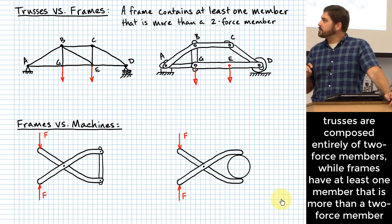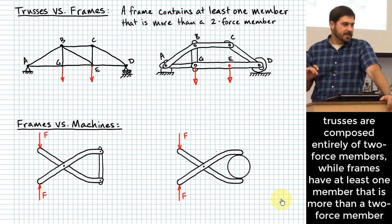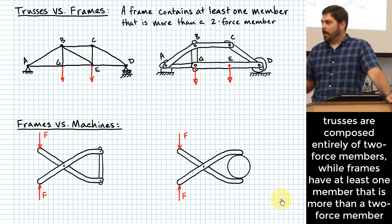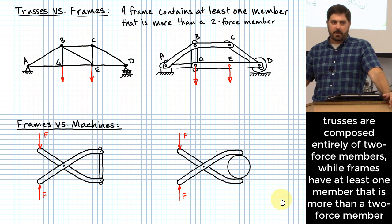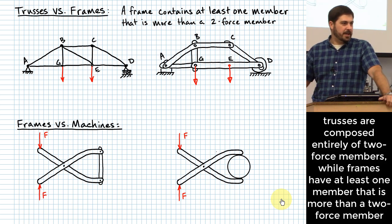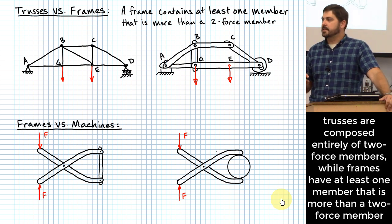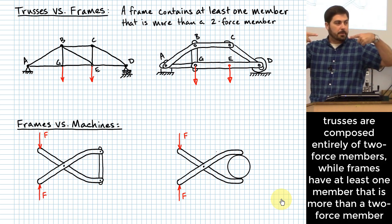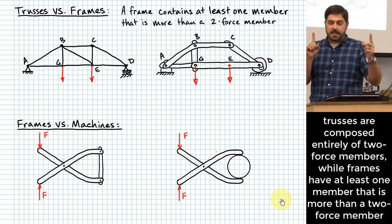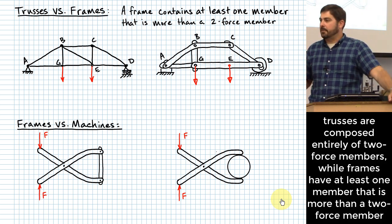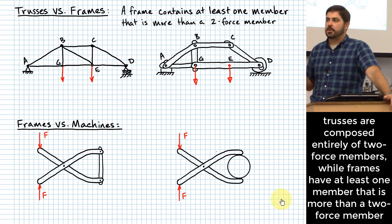Our definition of a frame is a structure that contains at least one member that is more than a two-force member. It actually carries other loads besides just tension or compression applied to the ends of a long slender member.